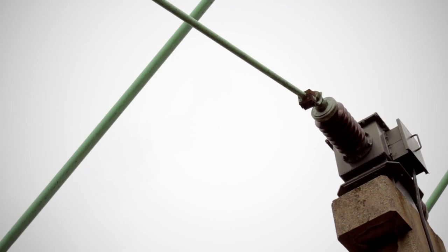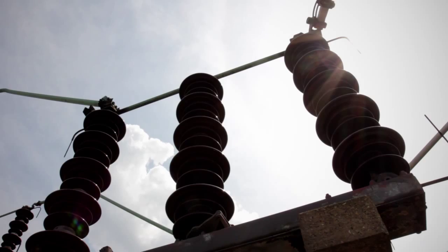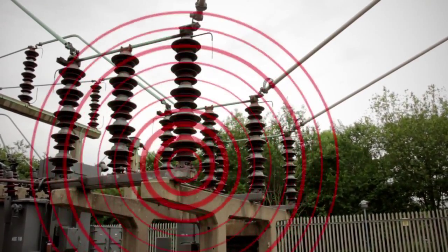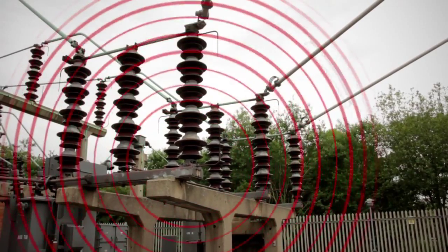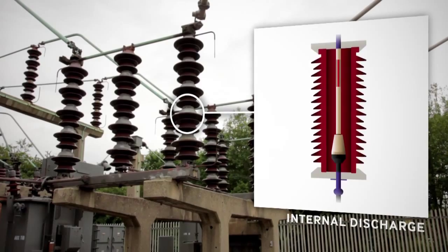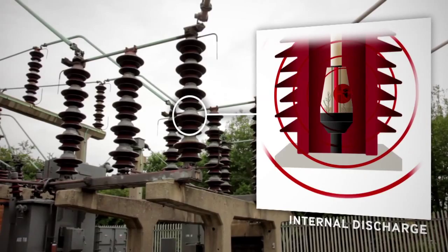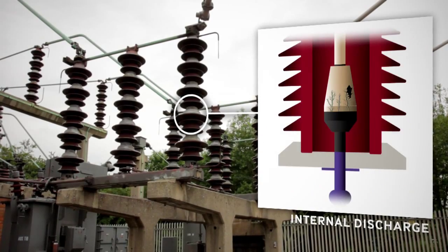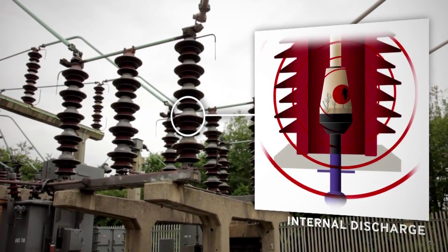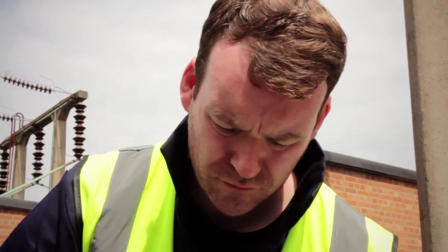But the high voltages used in switchyards require special techniques to detect and locate PD. Put simply, PD in switchyards has to be identified at a safe distance, using equipment which is safe to use in that environment and cost effective. The most serious PD activity in many switchyard assets is in the form of internal discharge — it is also the most difficult to identify. So we need to use an instrument designed specifically to locate activity on the inside of the asset, in the form of radio emissions.